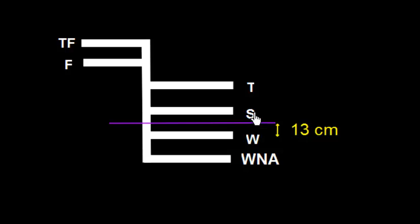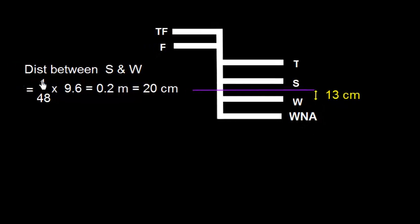We can find the distance between S and W mark by this formula: the distance between S and W is 1/48 times summer draft, which is 9.6, which equals 0.2 meter or 20 cm. So the distance between S and W is 20 cm.